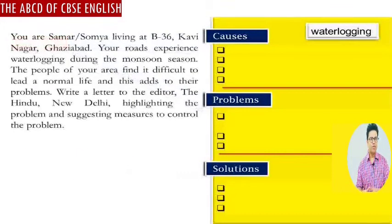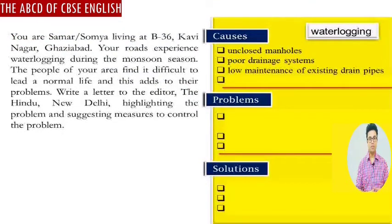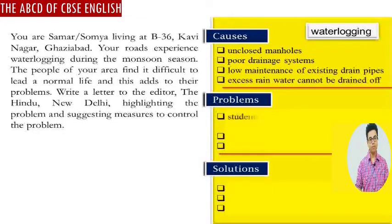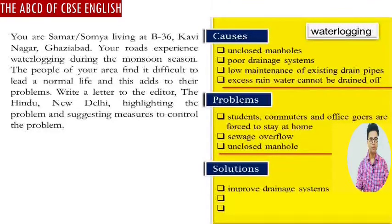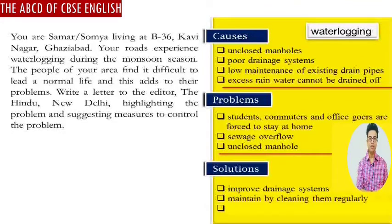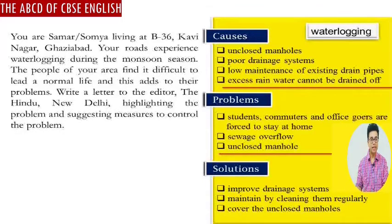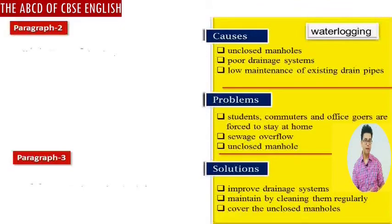Let us look at some causes of waterlogging: unclosed manholes, poor drainage system, and low maintenance of existing drain pipes. Some of the problems include: students, commuters, and office workers being forced to stay at home, and sewage overflow. For solutions, the concerned authority can improve the drainage system, maintain and regularly clean existing drain pipes, and cover the unclosed manholes.